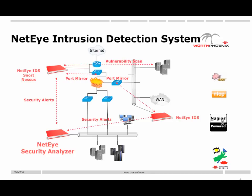The combination of SNORT and NASUS on the NetEye IDS provides a wide range of functionality to protect internet services and security aspects of a company, and helps reduce the daily workload for network and security administrators.